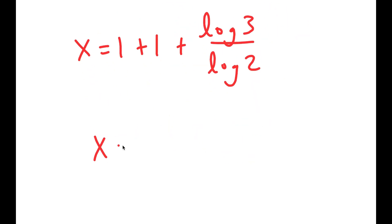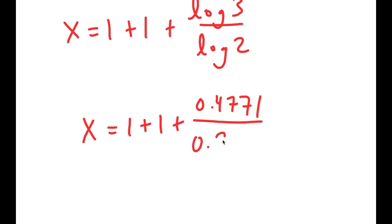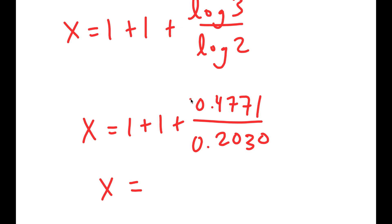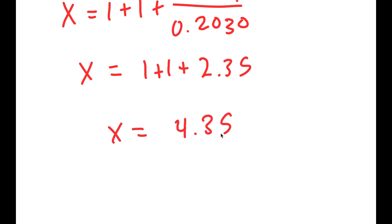Now, log 3 is equal to 0.4771 and log 2 is equal to 0.2030. So if I divide log 3 by log 2, I get 0.4771 divided by 0.2030, which gives me 2.35. So I get 1 plus 1 plus 2.35, which equals 4.35. So this is my answer.